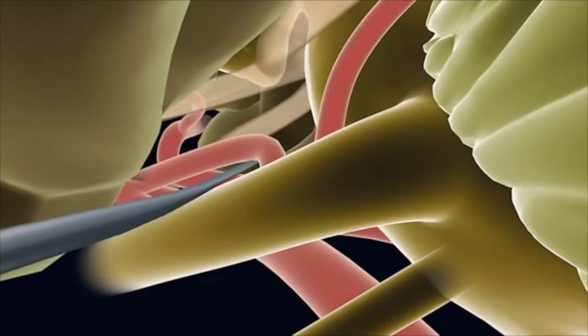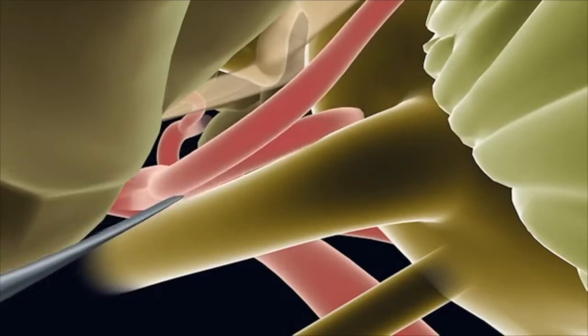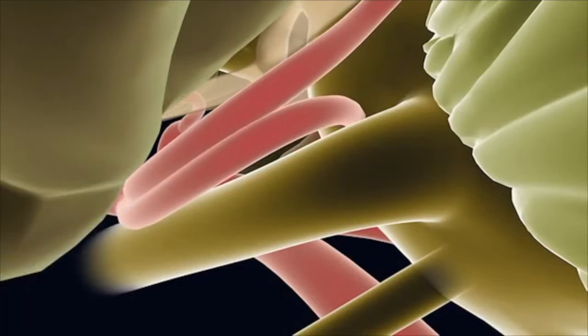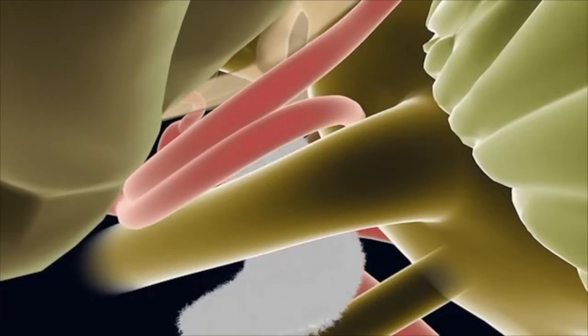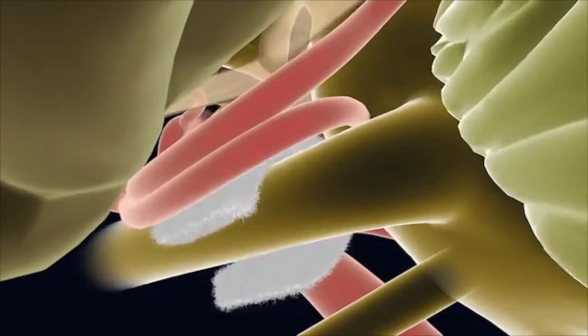In this case of trigeminal neuralgia, the blood vessels that are compressing the nerve are identified and the neurosurgeon delicately separates them away from the nerve with a small piece of Teflon felt, leaving a space in between the nerve and vessel.